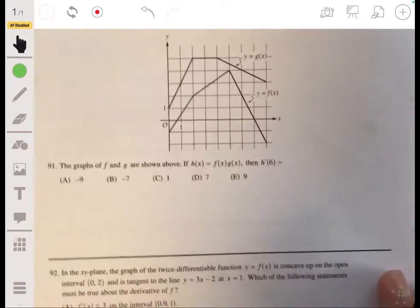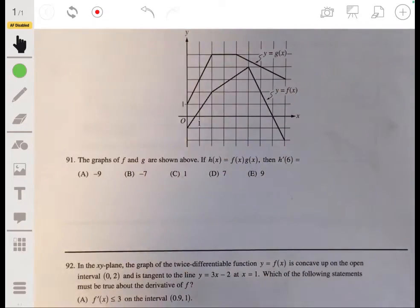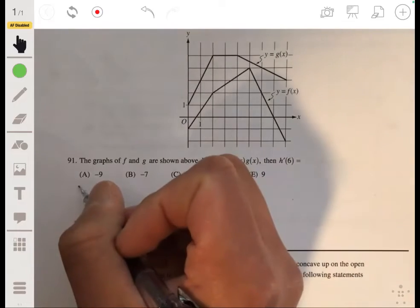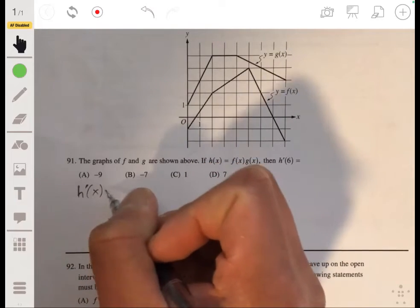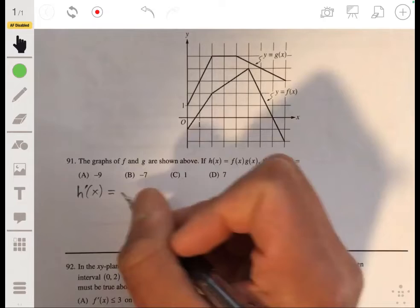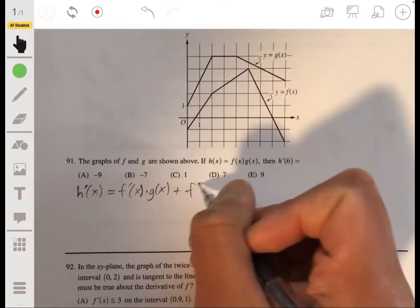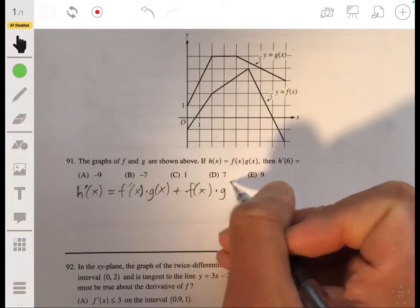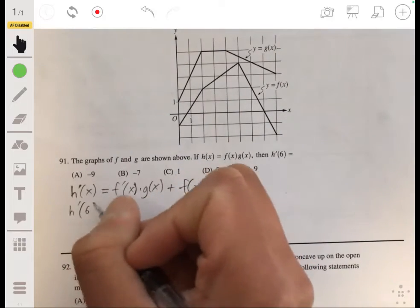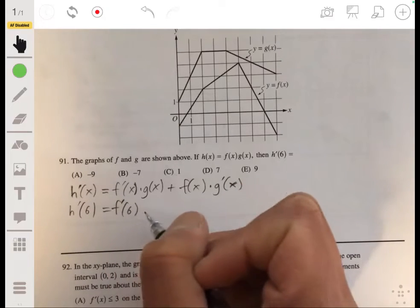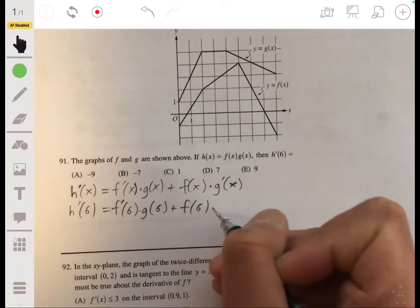The last two. The graphs of f and g are shown above. If h of x equals f of x times g of x and h prime of six is—so this is going to just involve the chain rule or product rule. So if we took the product rule and just wanted to find h prime of x, that would be f prime of x times g of x plus f of x times g prime of x. So when we want to find h prime of 6, we just replace our x's with 6. So f prime of 6 times g of 6 plus f of 6 times g prime of 6.